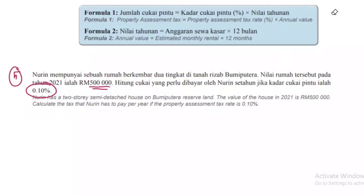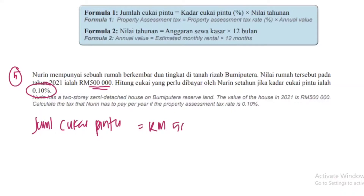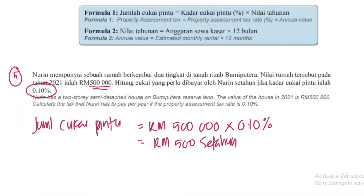Jumlah cukai pintu terus — sebab dia dah bagi nilai rumah tu dalam tahunan. Cukai pintu = RM500,000 didarab dengan 0.10%. Dia kena bayar RM500 setahun. Mudah je — yang ni dia kira terus sebab dah bagi nilai rumah dalam tahunan.